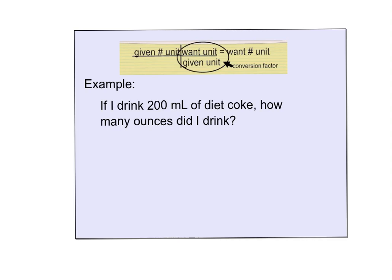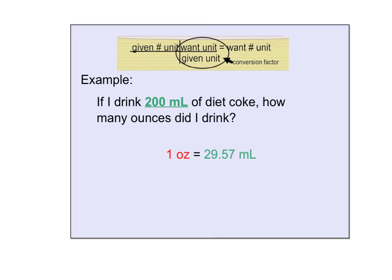Let's try one more together. If I drink 200 milliliters of Diet Coke, how many ounces did I drink? We're starting with the given, which is 200 milliliters of Diet Coke. We're going to multiply by the equality, and Google has given me information that one ounce is equal to 29.57 milliliters. I'm going to put the unit to get rid of on bottom, that's milliliters, so they cancel out, and one ounce on top.